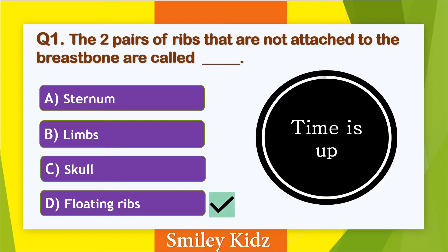The two pairs of ribs that are not attached to the breastbone are called Floating ribs.